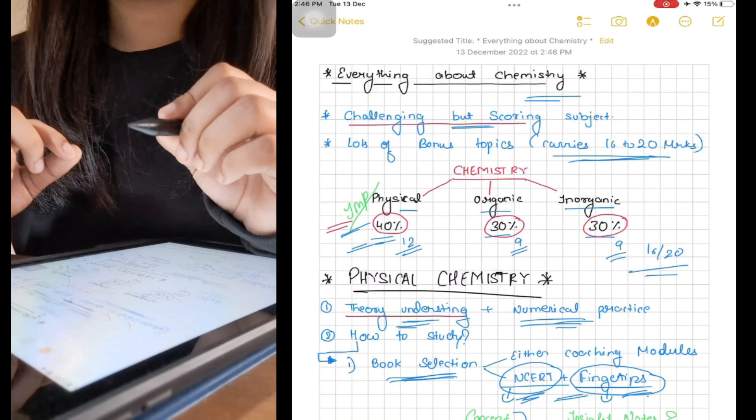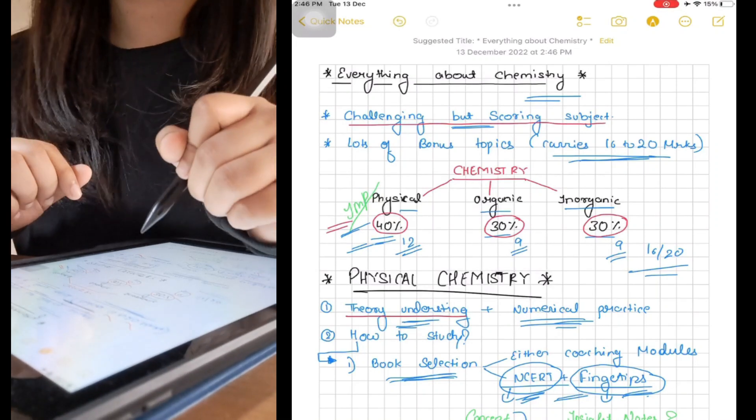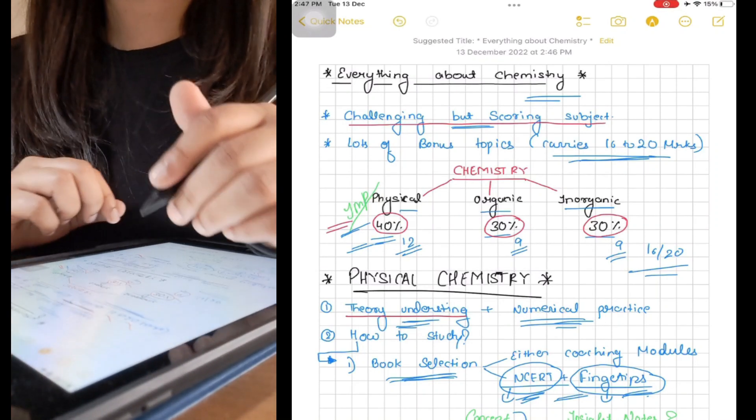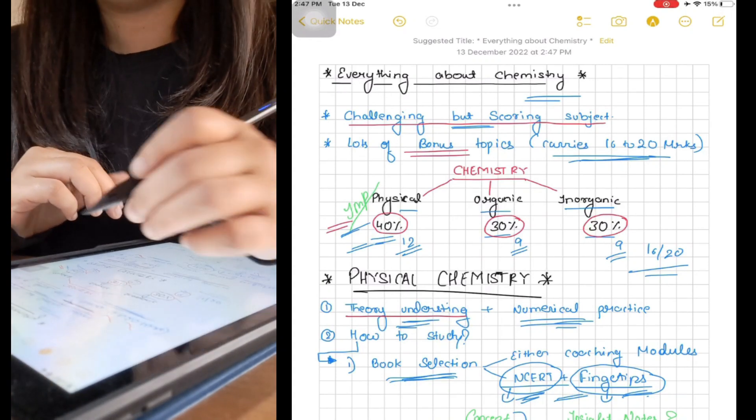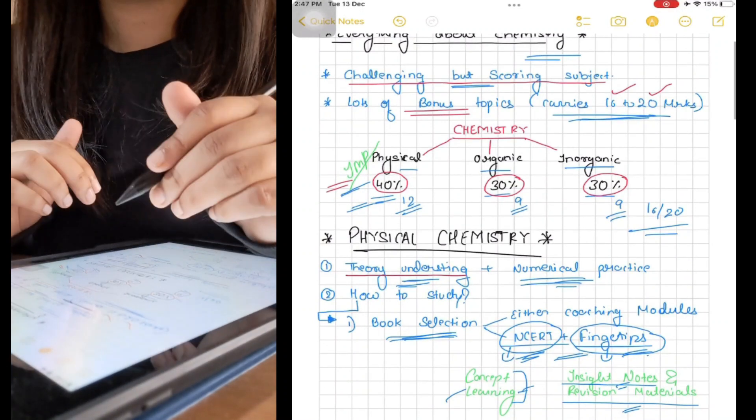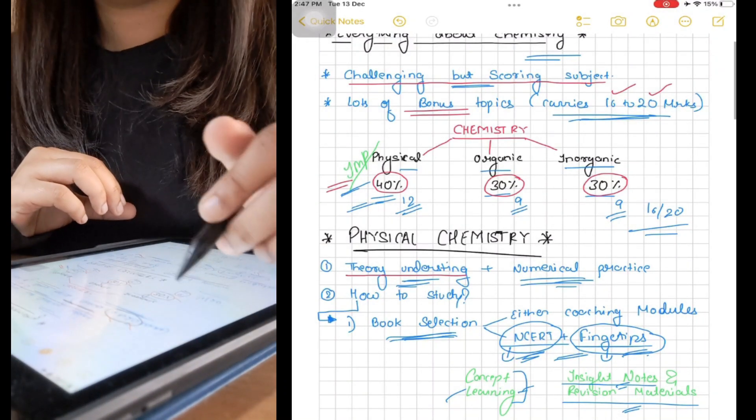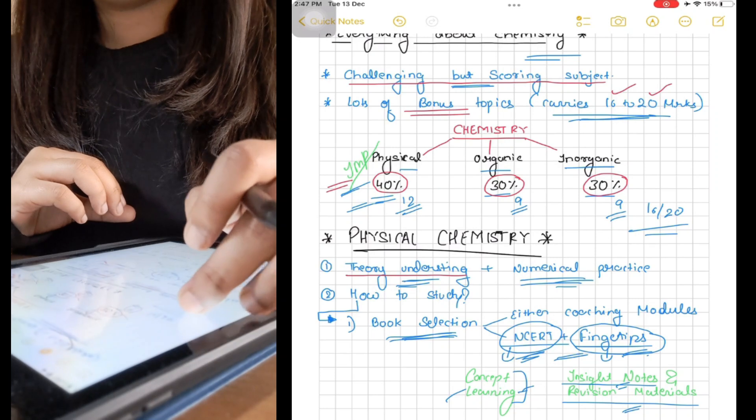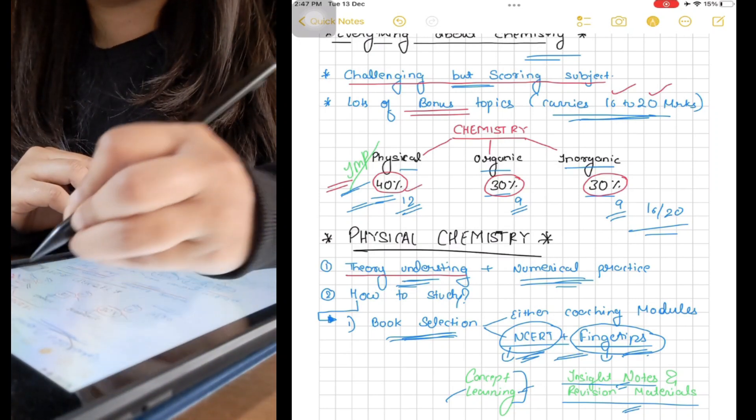Chemistry is no doubt a bit challenging, but it's also a scoring subject. Chemistry is the only subject in NEET which has lots of bonus topics carrying around 16 to 20 marks. I'll share the list of those topics later in this video, but for now let's discuss each part of chemistry separately.